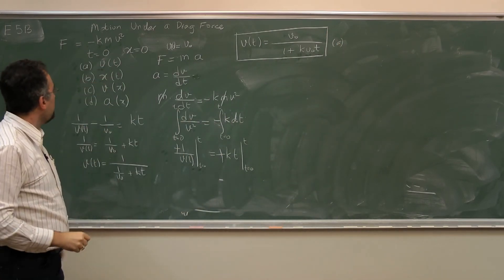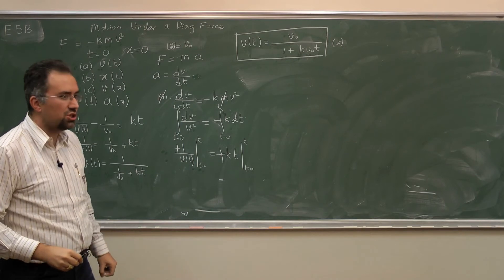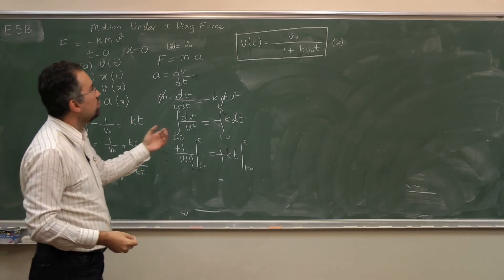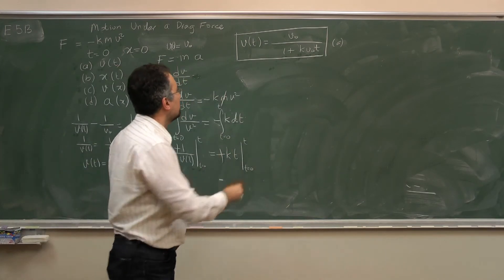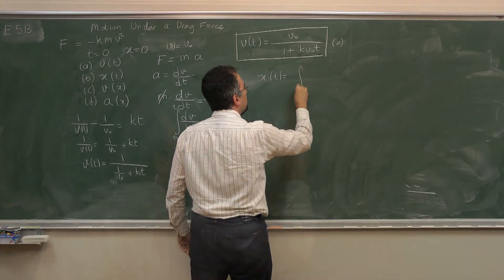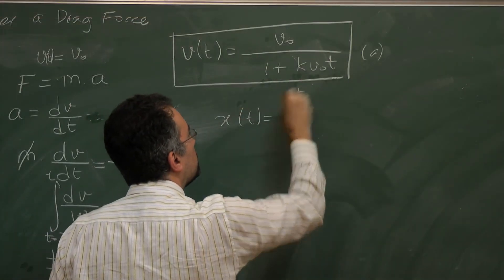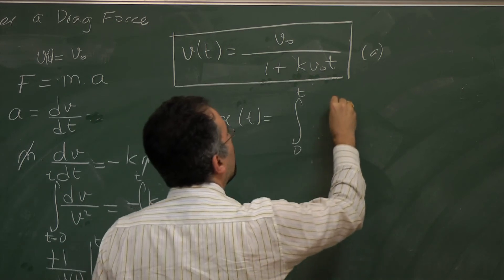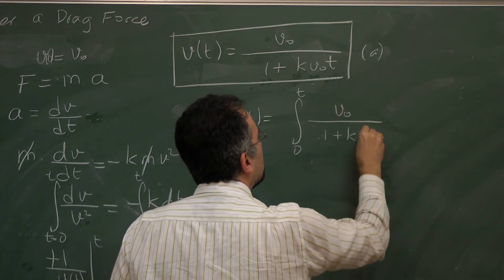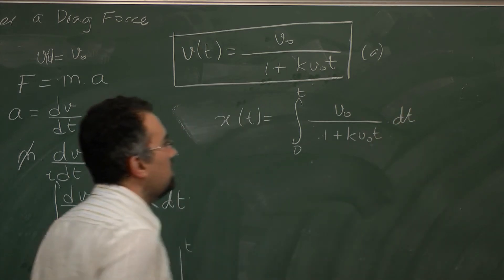Now part b is asking for the position as a function of time. What I'm going to have to do is integrate this with respect to time. So x as a function of time equals the integral from 0 to t of v0 over (1 plus k v0 t) dt.